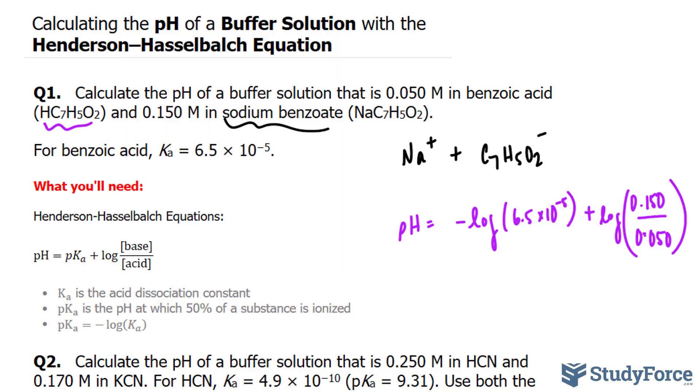This first part is equal to 4.187, and given that this is two significant figures, we should have two digits after the decimal place. So after this 8, everything is insignificant, but we won't round right now. We'll round at the very end.